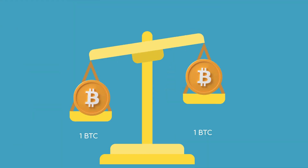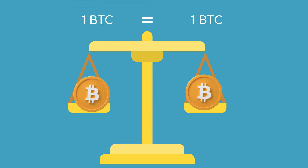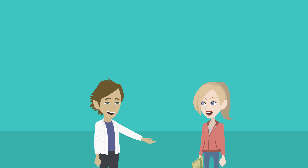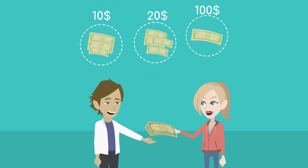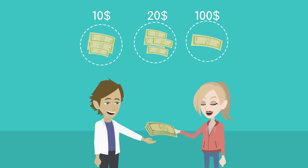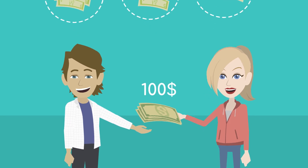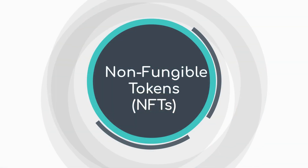Homogeneity: All units of fungible tokens are the same in terms of value, and there is no distinction between individual units. If you lend someone 100 dollars, they can return 100 dollars in any combination of 10-dollar bills, 20-dollar bills, or a single 100-dollar bill — the value remains the same.